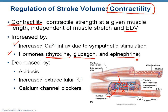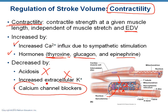Some things that decrease contractility include acidosis — if your body fluid pH is below normal — and increased extracellular potassium ions, which affect the charge difference across the membranes of your cardiac muscle fibers and make it more difficult to depolarize them, leading to contraction. And then drugs: maybe you know somebody who's taking a calcium channel blocker — those are drugs that block the influx of calcium ions into the cardiac muscle fibers.